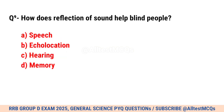Question No. 9. How does reflection of sound help blind people? Correct option is B. Echolocation.